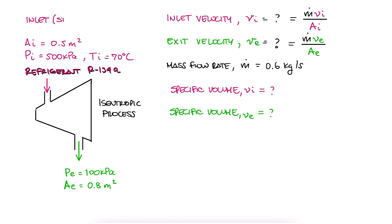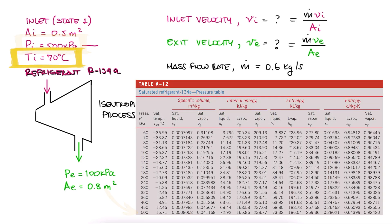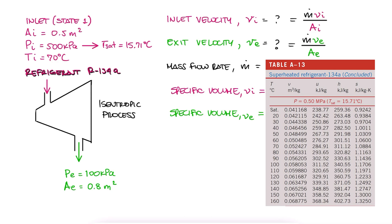The inlet or state 1 is fully defined. We have a pressure and a temperature. Starting with the saturated tables, we'd see that the current temperature is higher than the saturation temperature for a 500 kPa pressure. So, we go to the superheated tables for R134a and look for 500 kPa and 70 degrees Celsius to write down V1, the specific volume for state 1.